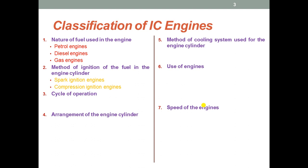The third classification is cycle of operation. We have two types: the two-stroke cycle engine and the four-stroke cycle engine. Nowadays we also have five-stroke as well as six-stroke cycle engines. If the cycle of operation is completed in two movements of the piston, we call it a two-stroke engine. If the cycle is completed in four movements of the piston, we call it a four-stroke engine.